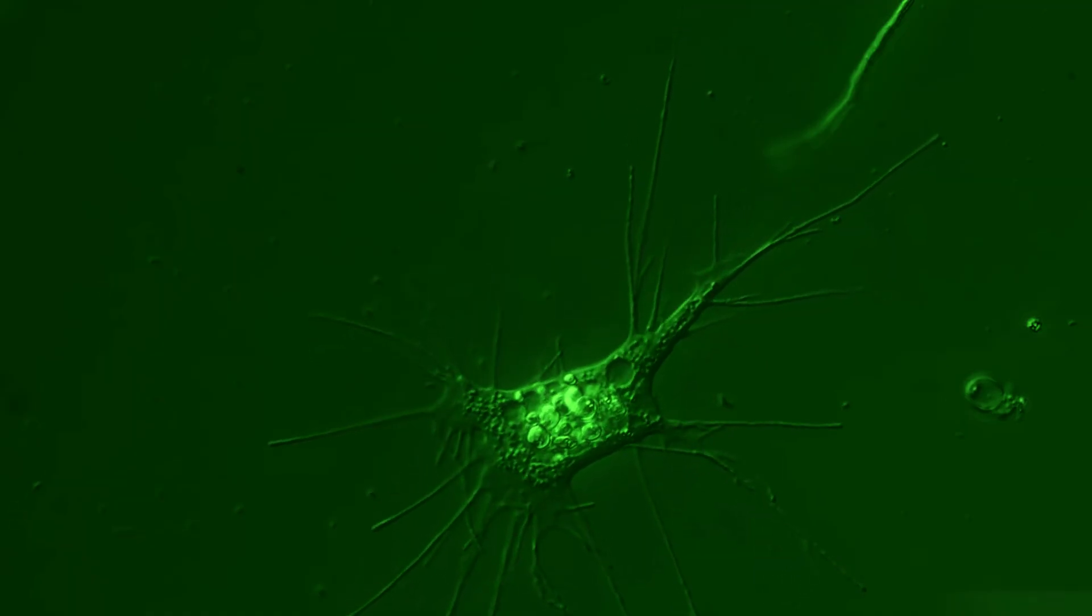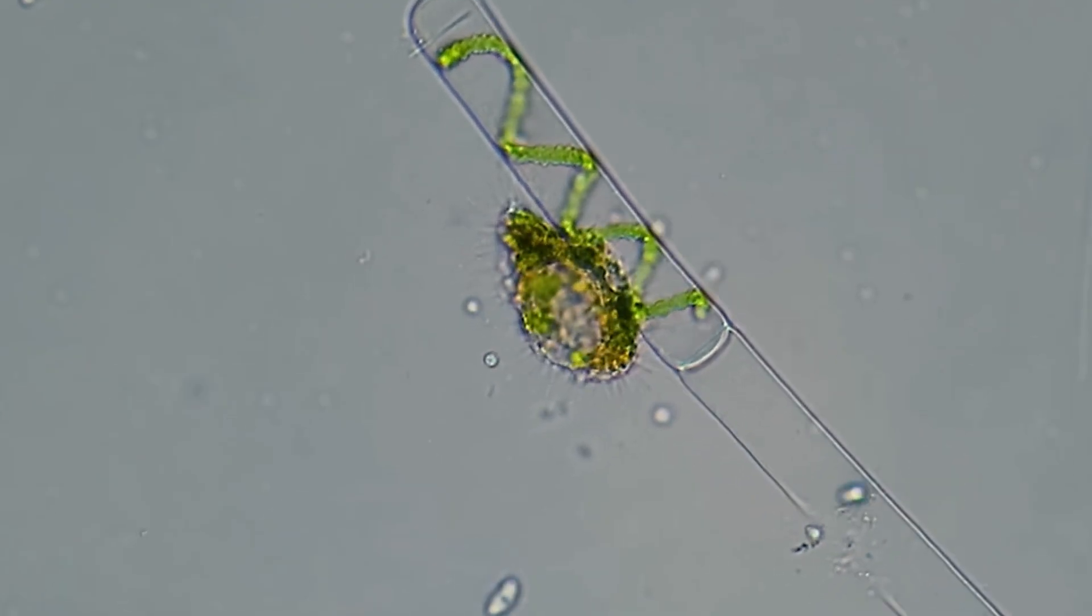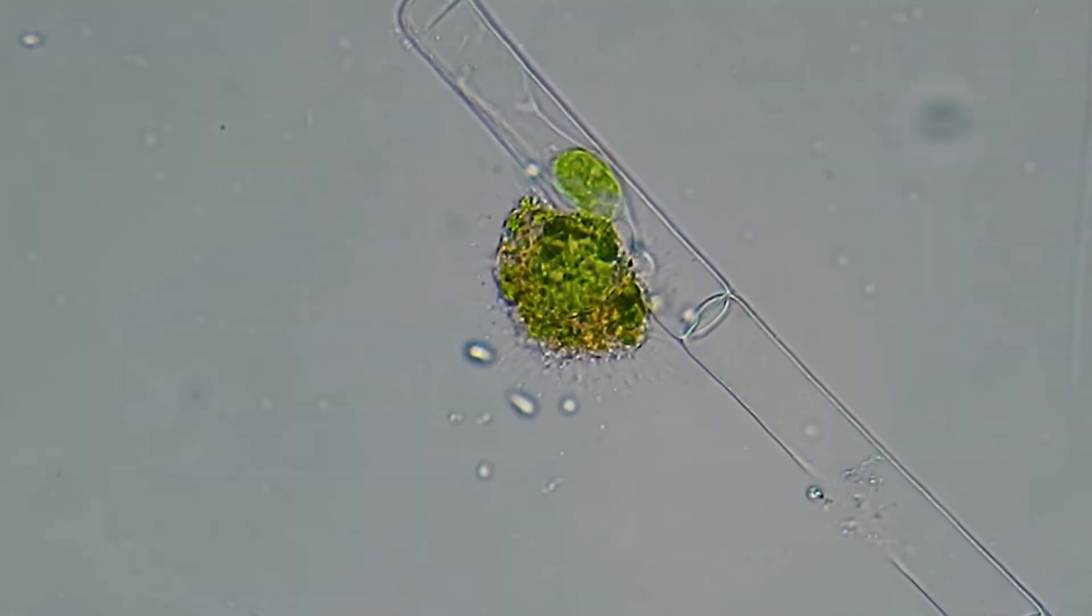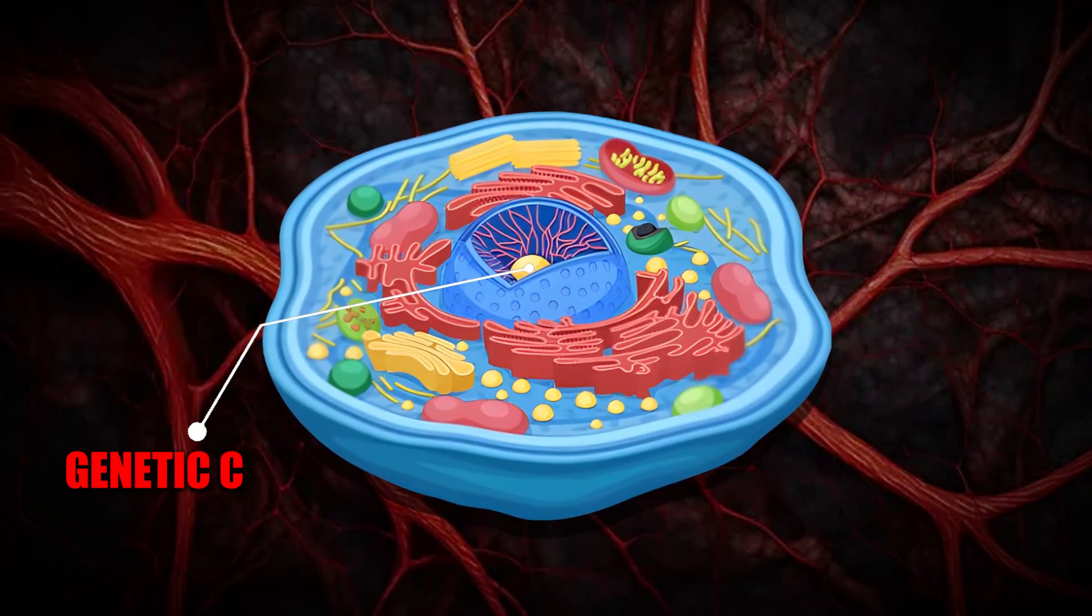While some parasites were changing their appearance, others took things even further. A virus finds a living cell, attaches to it, and injects its own genetic code. That code then takes over the cell's machinery and forces it to build more viruses.